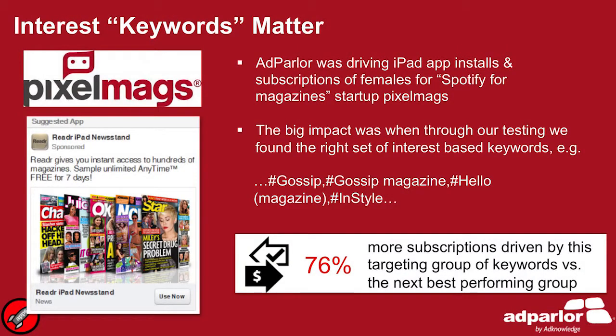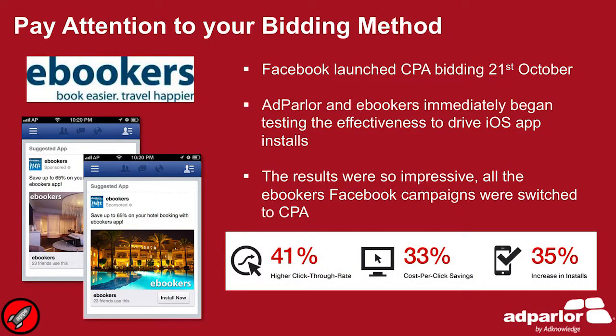We're doing work with Pixel Max, which is essentially the Spotify for magazines — you pay something like £4.99 and get unlimited access to a whole range of different magazines. We used keyword targeting there, targeting specific keywords such as gossip magazine, Hello magazine, etc., which was really powerful, and you can see the results. With Ebookers, a big travel client that also has an app, Facebook recently introduced CPA bidding as of the 21st of October. We ran an app install campaign for Ebookers, and using CPA bidding on top of everything else helped us significantly, with really good results.